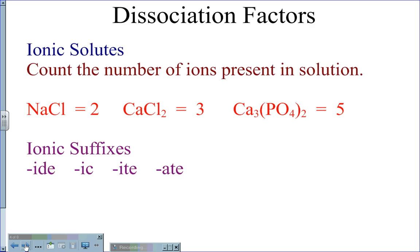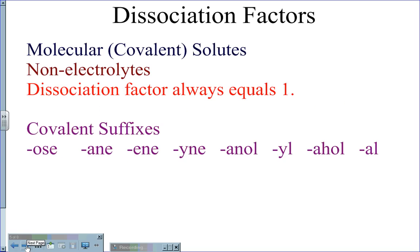Typically, ionic compounds will have specific suffixes. For molecular solutes, also known as covalent solutes, these are non-electrolytes, and their dissociation factor is always 1. Covalent suffixes tend to be "-ose", "-ane", "-ine", "-ain", "-anol", "-il", "-ahol", and "-al", such as glucose, methane, butine, propanol, and alcohol. Any of those will typically indicate you are dealing with a covalent or molecular solute, making it a non-electrolyte with a dissociation factor of 1.